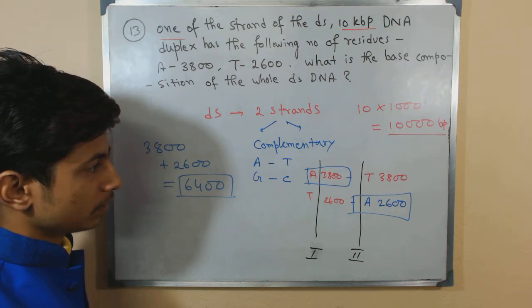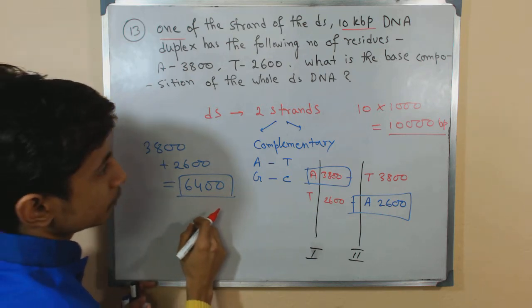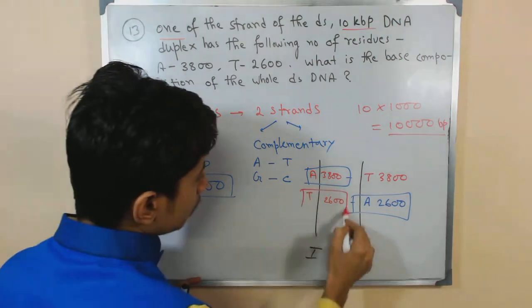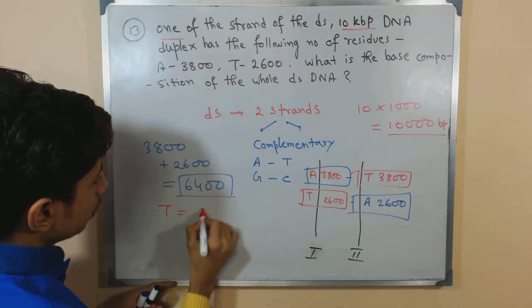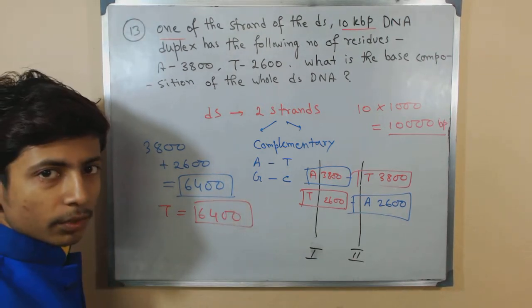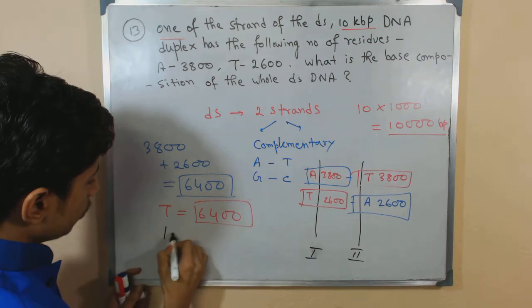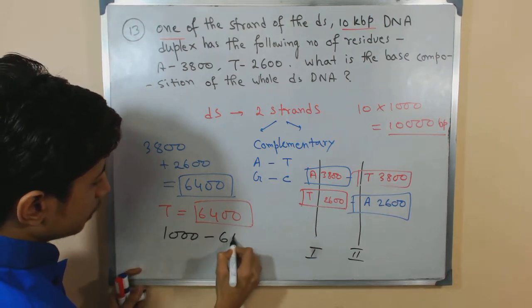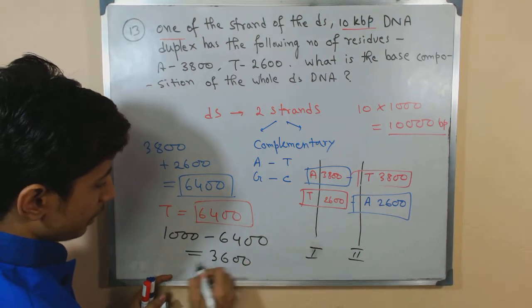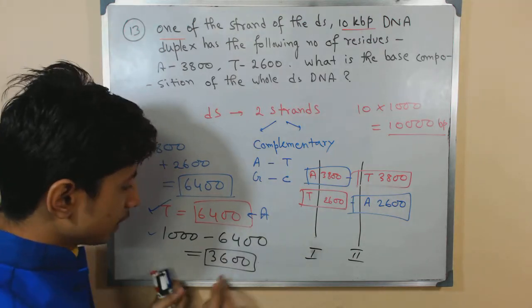So it's 10,000 base pairs total. Among the 10,000 base pairs, 6400 is adenine. Similarly, thymine also equals 6400. On the other hand, from 10,000, if we subtract this value, what remains is 3600.